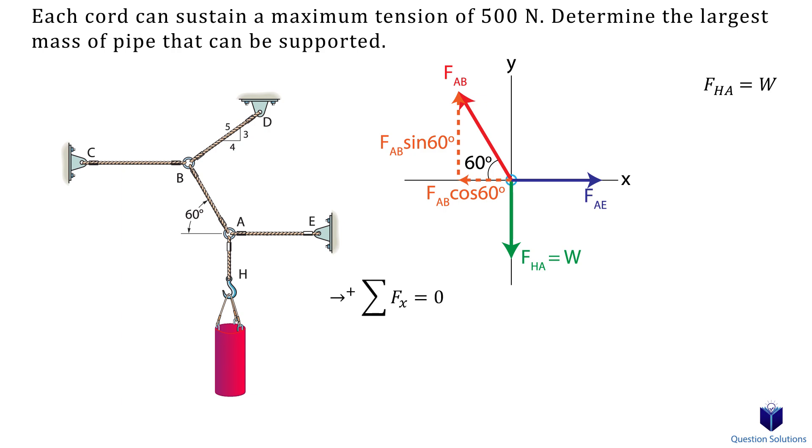First for the x-axis forces, and we will assume right to be positive. Next we look at y-axis forces. We will assume up to be positive. Instead of writing force AH, we can write the weight since they are equal. Let's isolate this equation for force AB. Now we can use this value and plug it into our previous equation to isolate that one for force AE. You will see at the end why we do this.